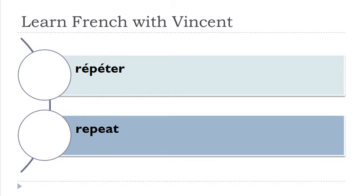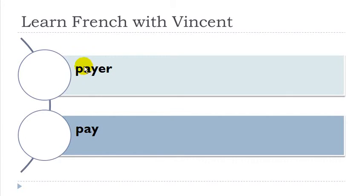Répéter. Payer. As we had previously, you've got this 'y' — just consider you have one 'e' here, combine the two and you get 'a', then a second 'e' and you combine those letters and get the sound 'y'. Payer. Payer.